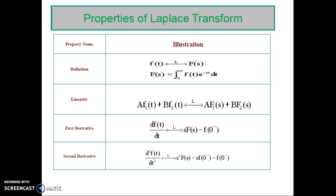The first important property is the linearity property. So, K into f of t plus B into f of t, if you take the Laplace, you can get A into f1 of s plus B into f2 of s. This property states that the Laplace transform of a linear combination of signals is the same as the linear combination of their individual Laplace transforms. The resultant region of convergence is the intersection or overlap of individual ROCs.